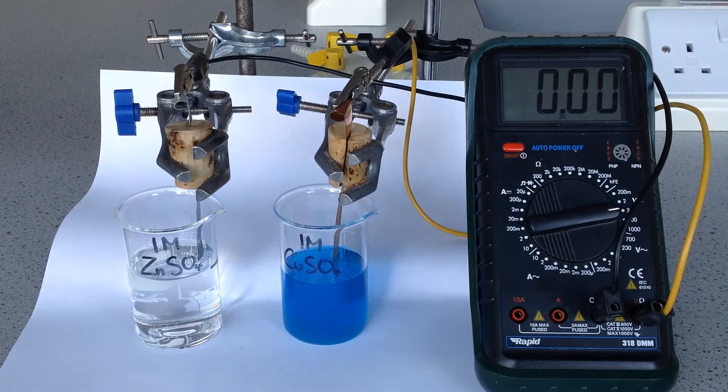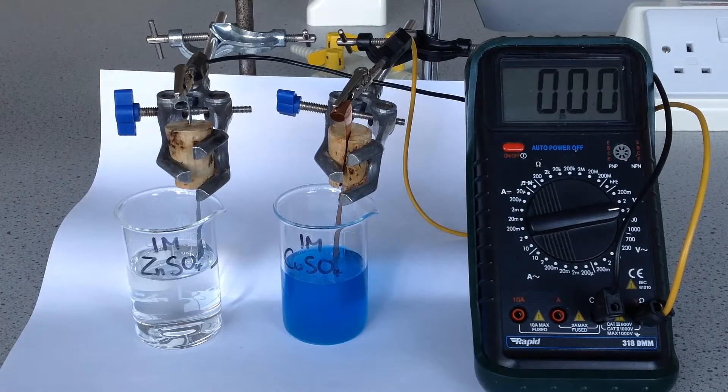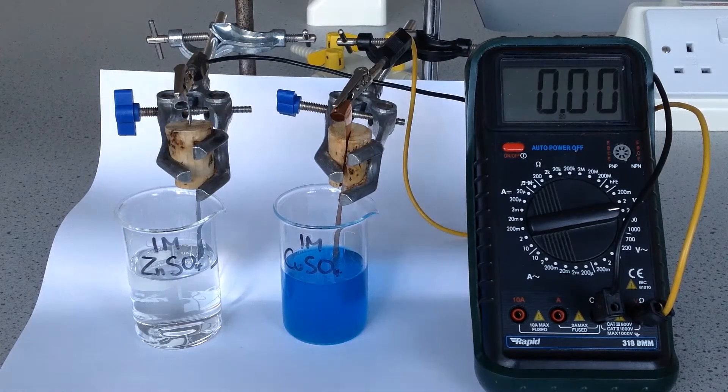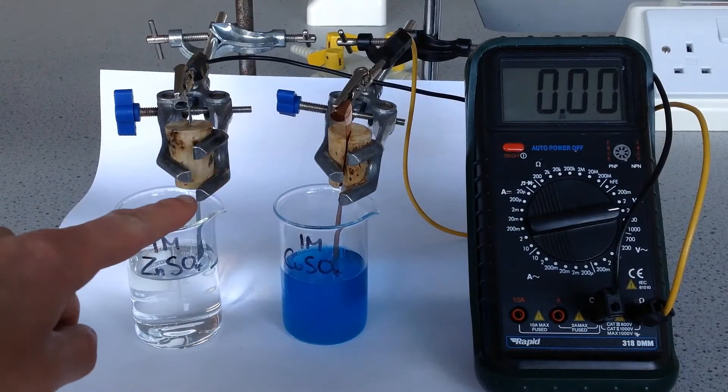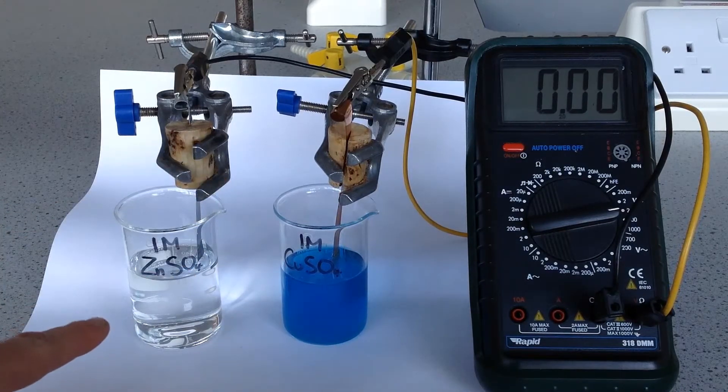In this video we have two half cells that we're going to connect to form an electrochemical cell. We've got one mole per decimetre cubed zinc sulphate here with a piece of zinc in, so that's a zinc zinc two plus half cell.